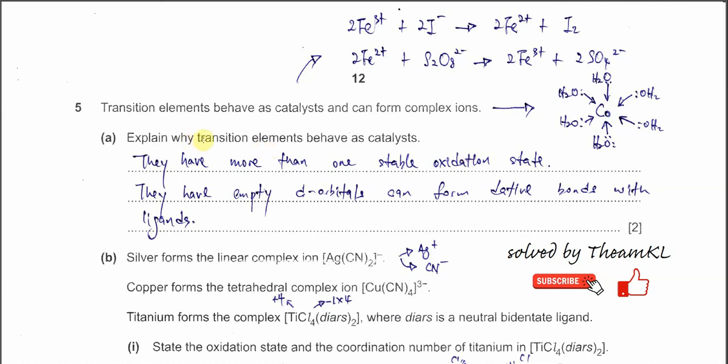Question 5. Transition elements behave as catalysts and can form complex ions. A good example is the iron 3 ion reacts with iodine. It gets reduced to iron 2 and iodine forms. After this, iron 2 ions will further react with peroxyl disulfide ion and forms back the iron 3. So the iron 3 gets back to the first step and reacts again. The iron 3 is regenerated, so we say it is a catalyst. Whenever elements or ions can be regenerated after reaction, it's a catalyst.